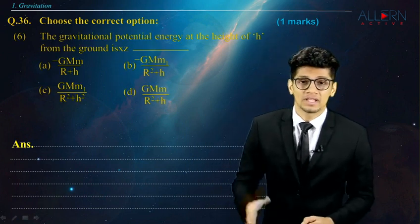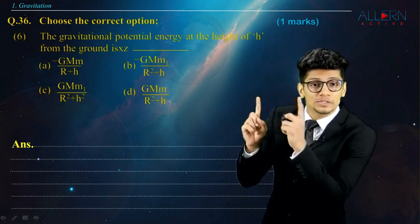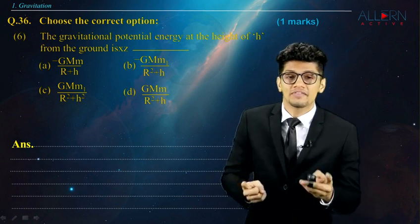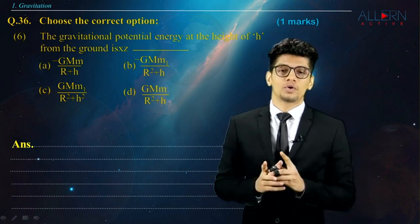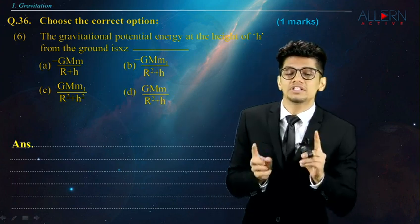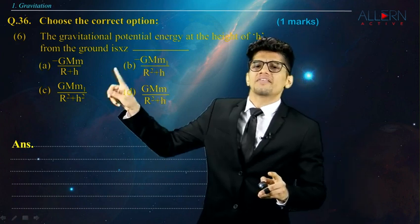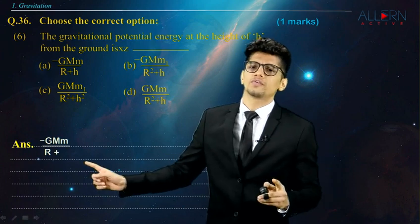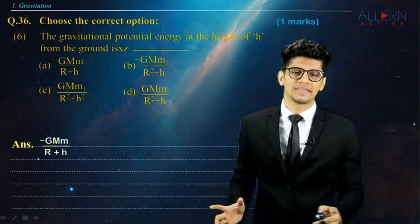Next question. The gravitational potential energy. Now, this particular question, we have already solved in escape velocity. And we have the formula from escape velocity that is PE is nothing but minus GMm. There, we have seen minus GMm upon r. Here, we have r plus h. That means if at all the height increases, just we have to add the value of h. And that's it.